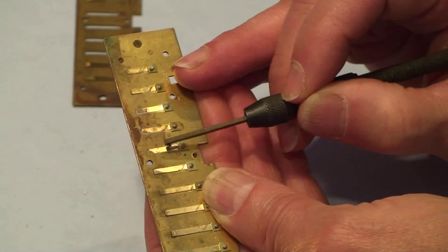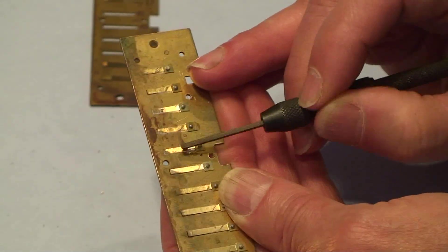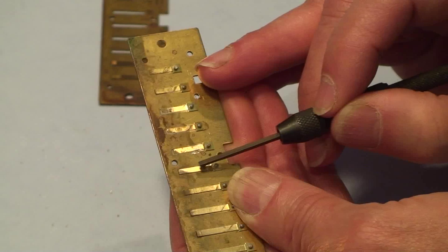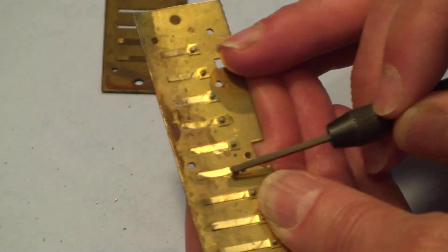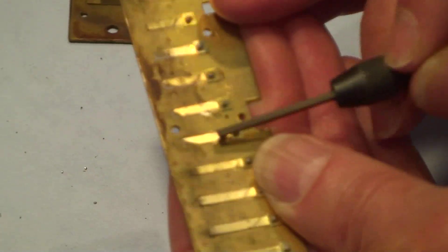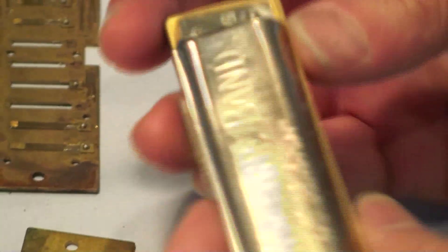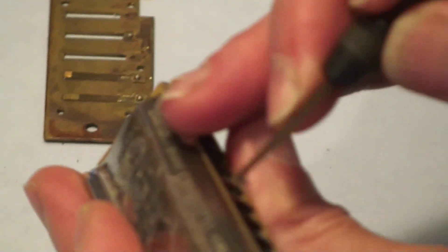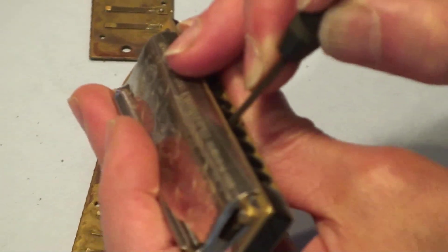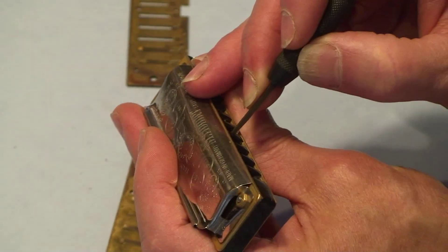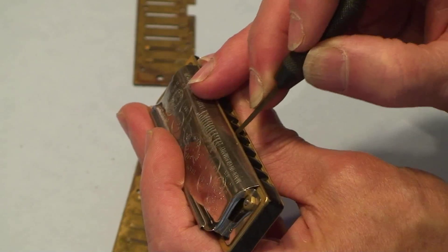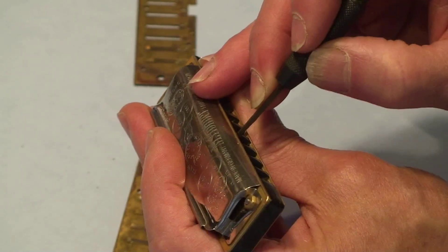Once you get used to doing that, then you can start doing things like this. For a blow reed, you can reach into the harmonica, find that reed through sense of feel more so than sight, and tune or drop the pitch of the reed that way.